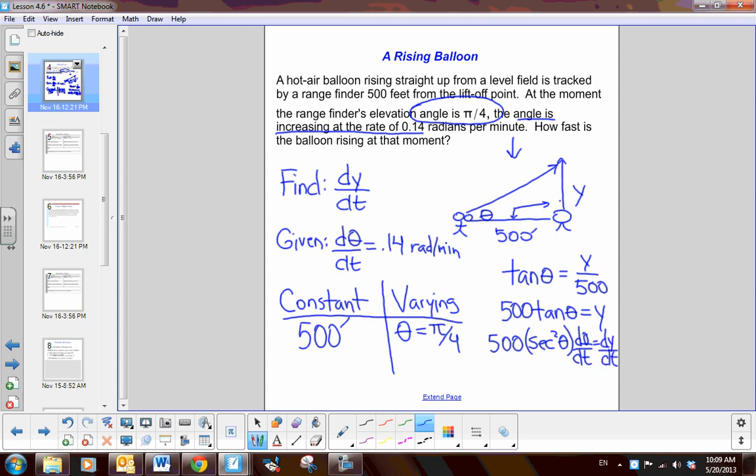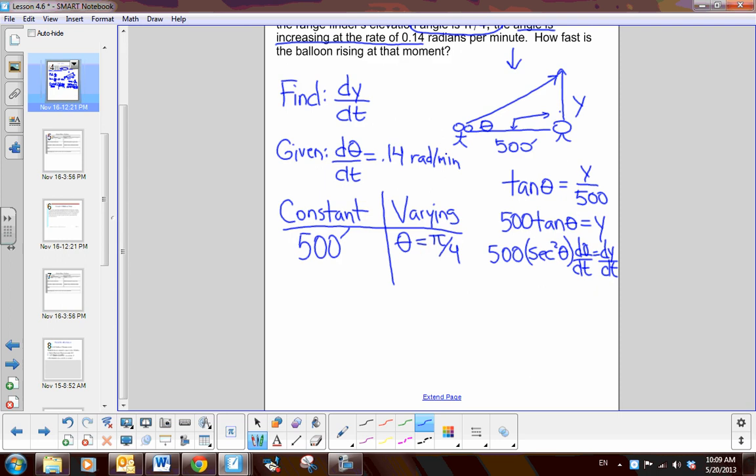So, remember, that's what I'm solving for is how quickly is that balloon rising? Now, I substitute any facts that I have. Notice I've already used this fact. So, now I'm going to use that theta is pi over 4. So, I would go secant squared of pi fourth. And then I'm also told that change in theta is 0.14 and that will equal the change in y in respect to time.